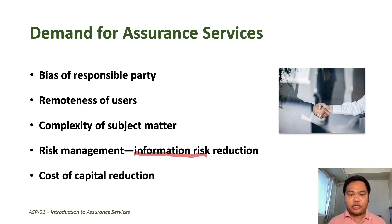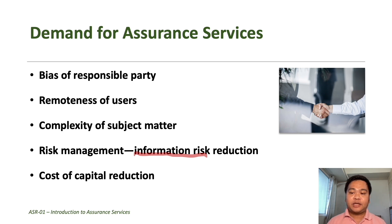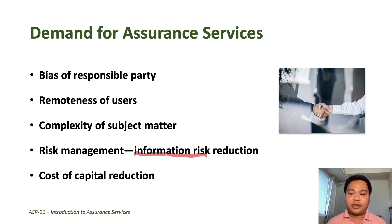Finally, another reason is cost of capital reduction. On the part of the providers of information, the higher the risk, the higher the related cost of capital. For example, if a bank thinks your company is too risky, it will charge a higher interest rate. That is why companies will often hire an independent assurance provider to issue a conclusion or opinion so that their capital providers can consider them less risky, and they can negotiate for a better interest rate or better return of capital.